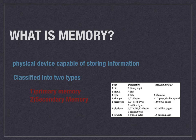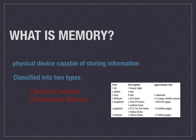Memory is a physical device which has the ability to store data, information, or instructions. You should know what an instruction is — a computer cannot do anything by its own; it works according to user instructions. These instructions are given to the computer through programs. A program is a set of instructions.